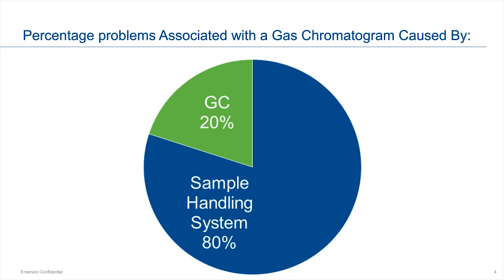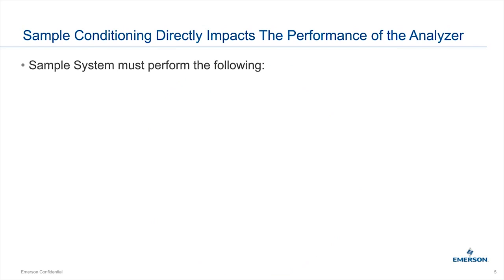What exactly is the purpose of a sample handling system? It has five functions. First, it needs to take a representative sample — whatever is flowing in the pipe is what you need to pull out and send to the GC. The GC gives very accurate results; it will analyze exactly what you give it. If you don't give it what's actually in the pipe, you won't get an accurate analysis of what you're looking for.